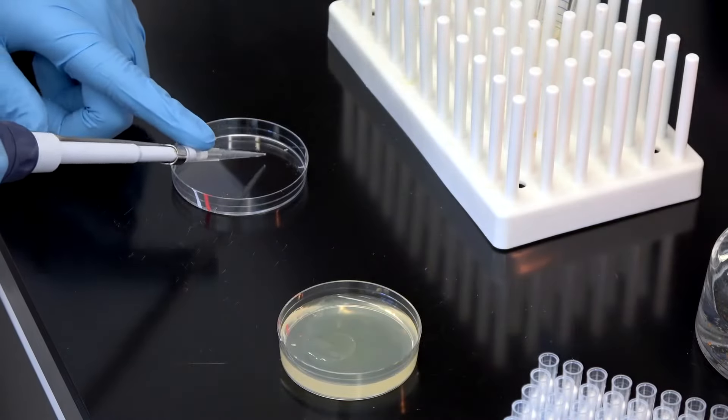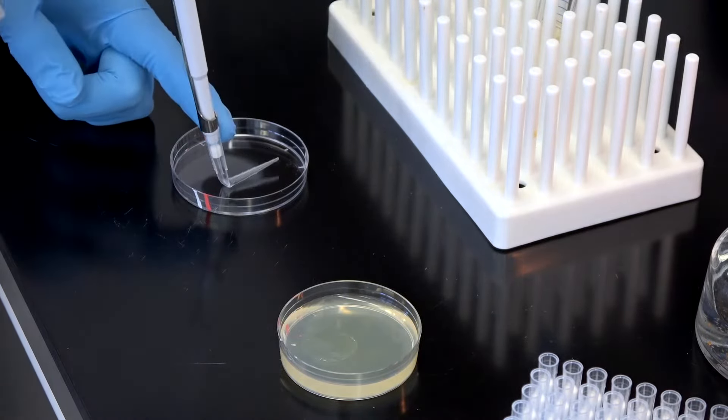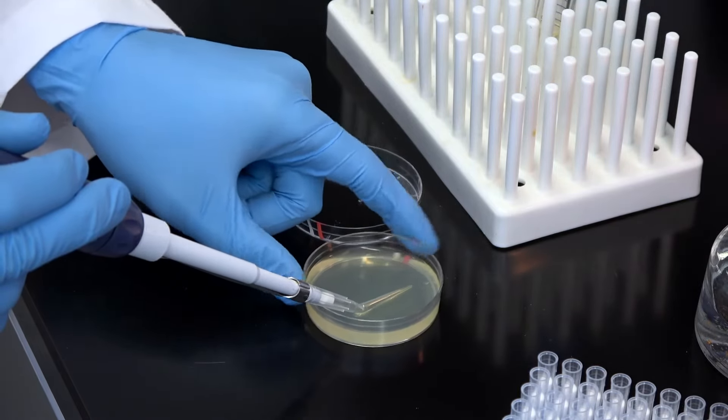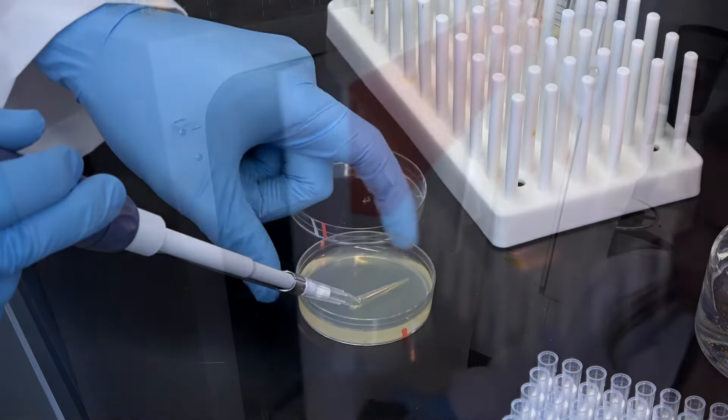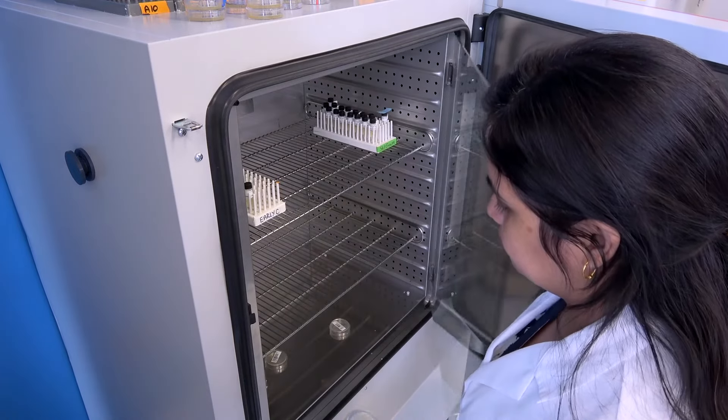If you use pipette tips that are easy to bend, like ours, you can also use them as spreaders when plating the cells. Be careful when bending the tip and make sure you are using good sterile technique throughout the process. The last step is to place the agar plate into an incubator for overnight growth.